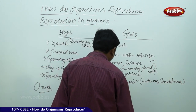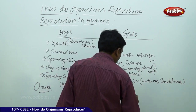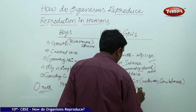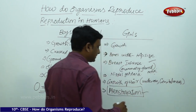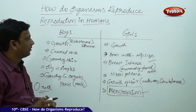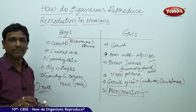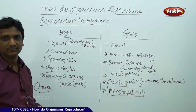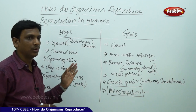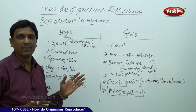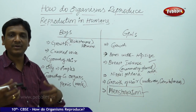The onset of menstruation is an indication that ova are being released in females. These changes do not happen all at once — they may happen slowly over some months. People in adolescence should be aware of the changes happening in their bodies.